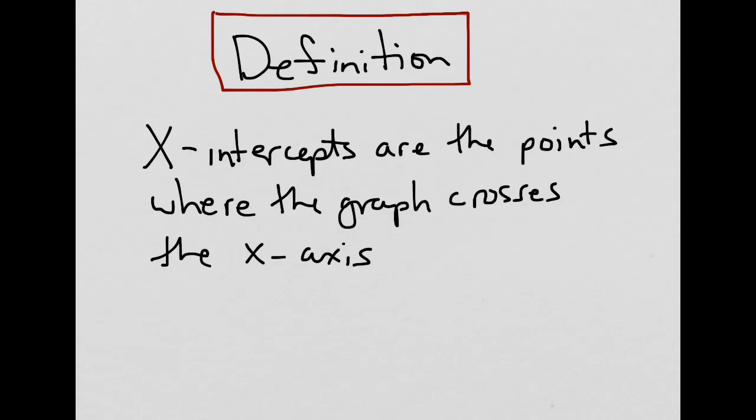To begin, let's look at a definition. The x-intercepts of a function are the points where the graph crosses the x-axis.